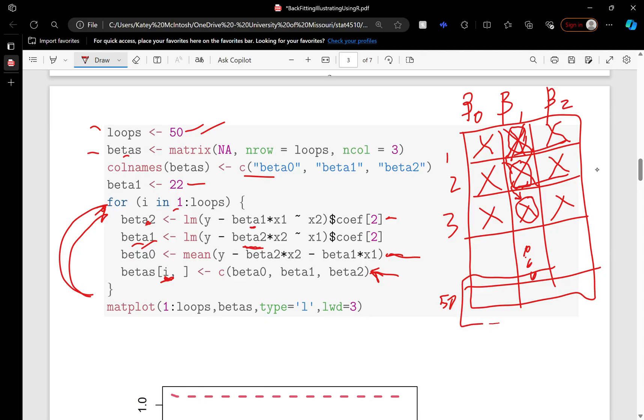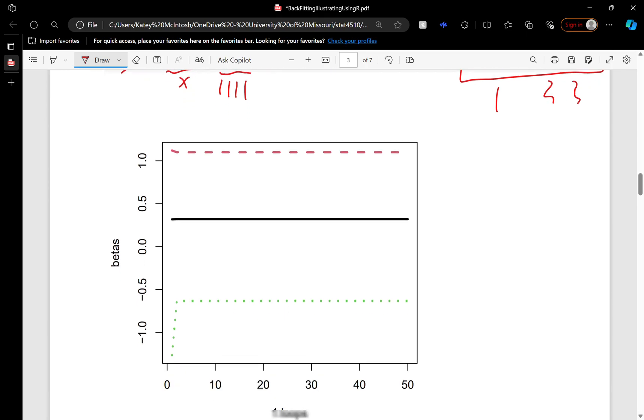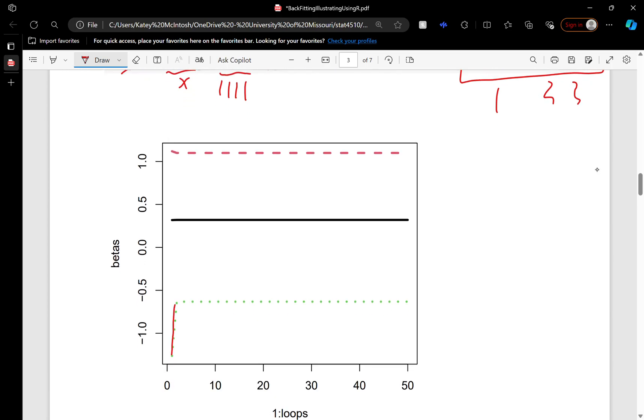This final row of estimates is going to be our backfitted parameter estimates, and it turns out they're equal to or converge to the least squares estimates for multiple linear regression. The matplot takes X here—this is a matrix—and it plots X against each column. In our case, there are three columns. Notice that the parameters converge, and we get pretty good convergence here. This one moves and then converges. Notice that 22 is not anywhere in there—that was our initial guess for beta 1 hat.